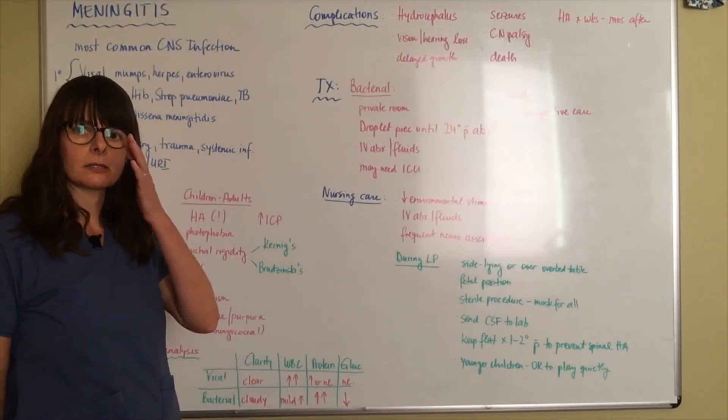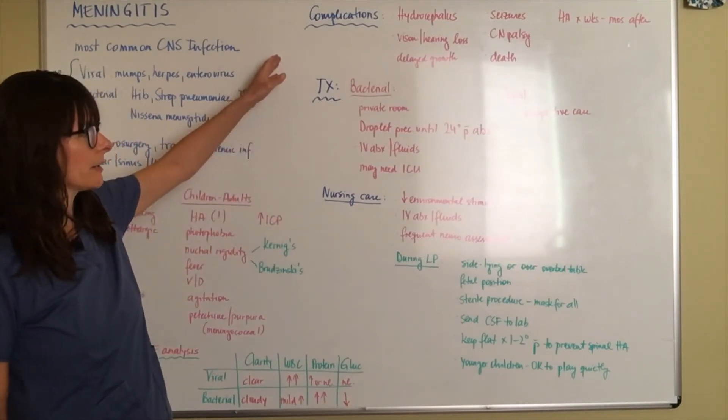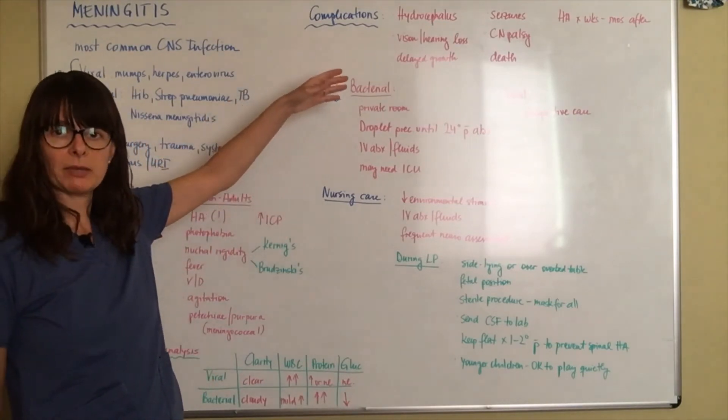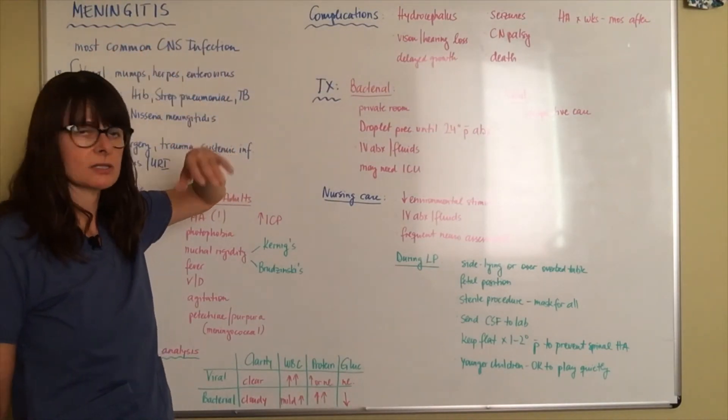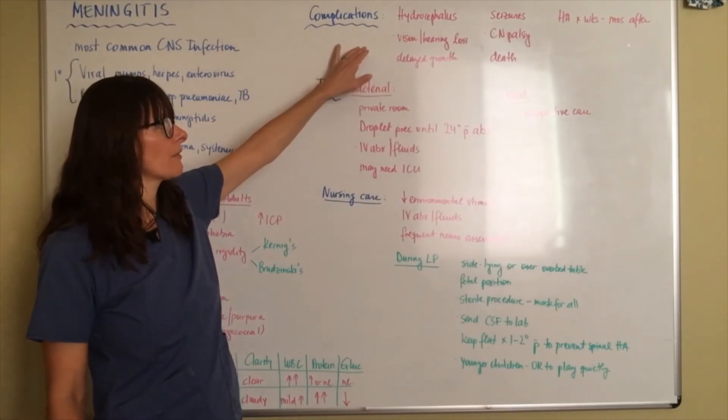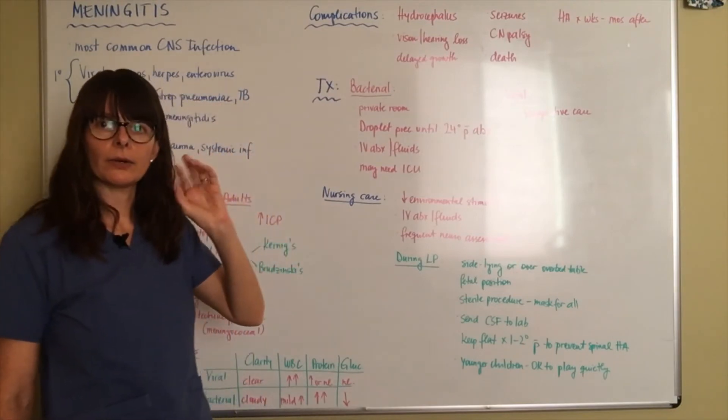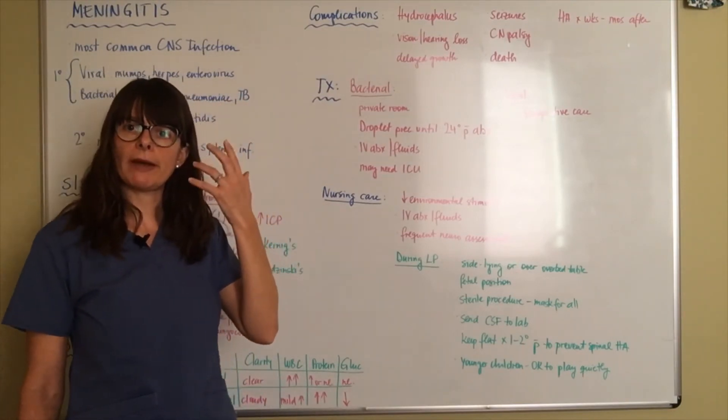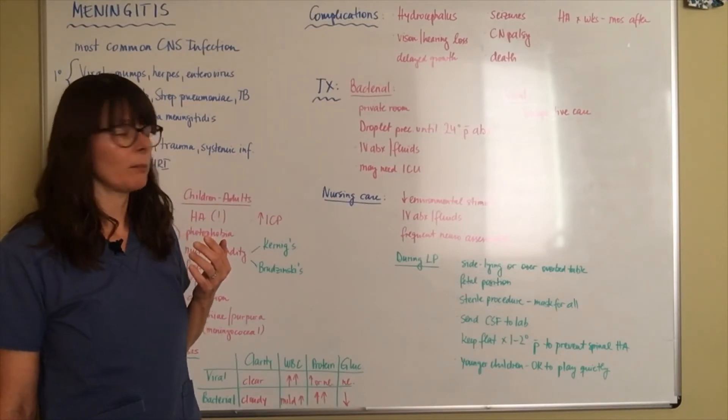Complications from meningitis in infants or children can be hydrocephalus, so increase in intracranial pressure that might persist for some time. There might be permanent or temporary vision or hearing loss. Again because it's the lining of the brain or the infection might have come from the ears or sinuses, so that can be a complication.